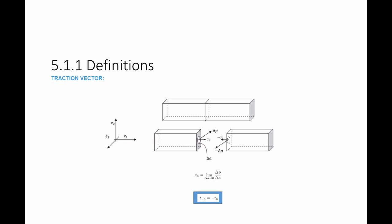Invoking Newton's third law, every action has a reaction that is equal but opposite in direction. The force vectors delta P on this point are equal in magnitude but opposite in direction to the force vectors on the corresponding point on the opposite surface. Therefore, the traction vector on the surface with normal vector negative n is equal to the negative of the traction vector on the surface with normal vector n.